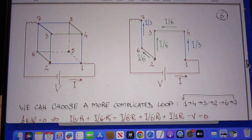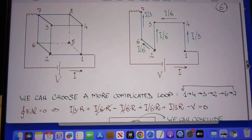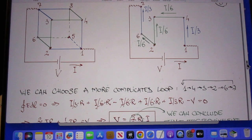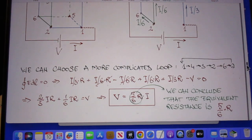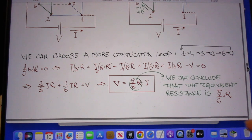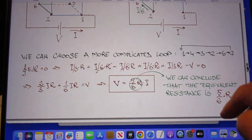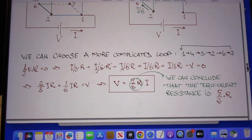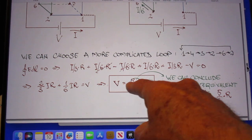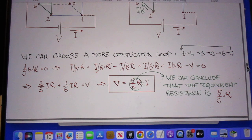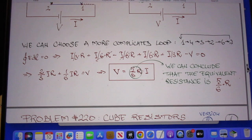He only shows that to show you the consistency, that no matter which closed loop you choose, the closed loop integral of E dot DL must again be zero, which now of course is more complicated, but the net result is the same. You find again that the replacement resistance, the equivalent resistance, is 5/6 R.